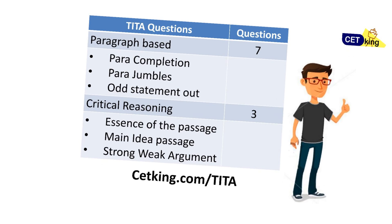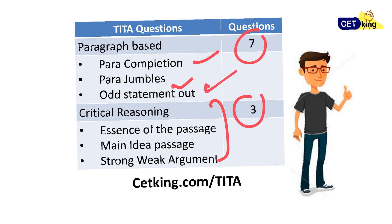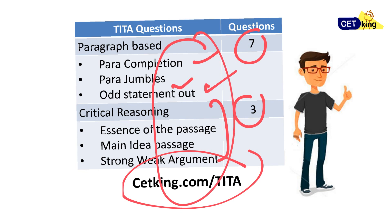These are the important topics from the TITA point of view. There will be 7 questions based on paragraph — para-completion, para-jumble, or odd sentence out — and 3 questions based on critical reasoning: sense of the passage, main idea, and strong/weak argument. Please go to ctkin.com/tita — I have provided handouts for TITA-type questions. If you can do even 20 questions of each type listed there, please download those handouts so you can solve a few questions easily in the exam.